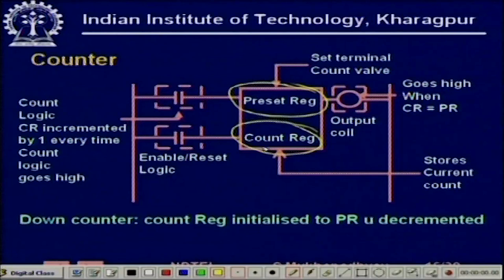For the counter, you are trying to count something — maybe the number of parts produced or the number of parts arriving on a conveyor. With every event taking place, you have to generate some kind of a pulse using contacts and sensors. Those external pulses will increment the count register. So in place of internal clock pulses used by the timer, here we have external pulses triggered by the events we want to count.